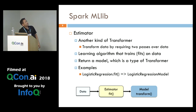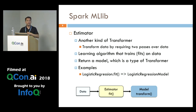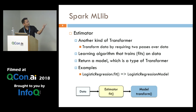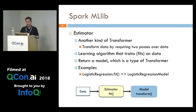The estimator is essentially your machine learning algorithm — that could be logistic regression, collaborative filtering, and all that. It returns a model, and with that model we can do predictions. For example, logistic regression is the estimator and it returns a logistic regression model. So we have transformer and estimator.